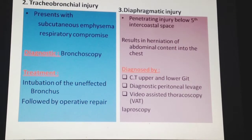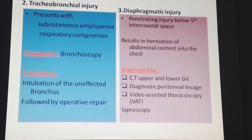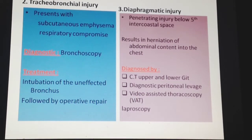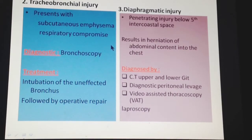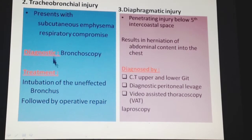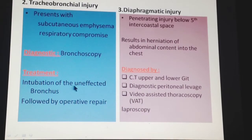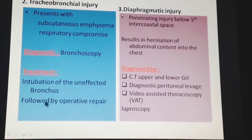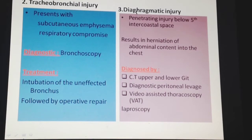Tracheobronchial injury presents with subcutaneous emphysema — air in the soft tissue of the chest, producing crackling sounds on palpation — and respiratory compromise. Diagnosis is confirmed by bronchoscopy. Treatment involves intubation of the unaffected bronchus followed by operative repair of the injury.